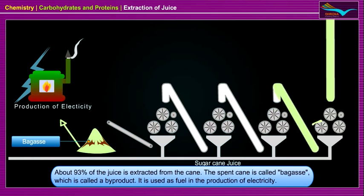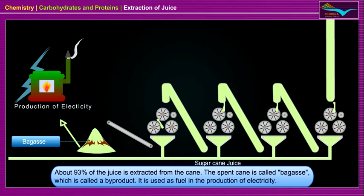About 93 percent of the juice is extracted from the cane. The spent cane is called bagasse, which is known as a by-product. It is used as fuel in the production of electricity.